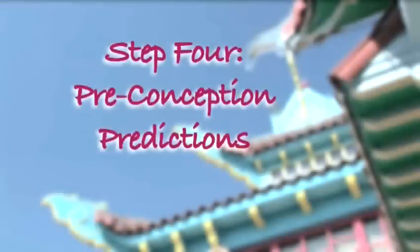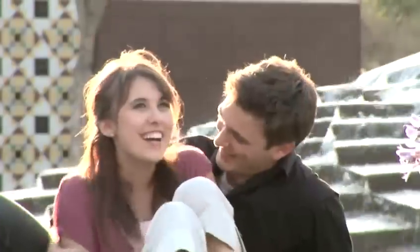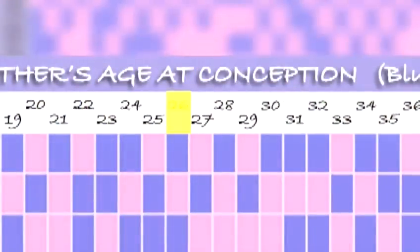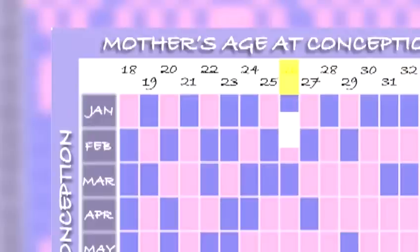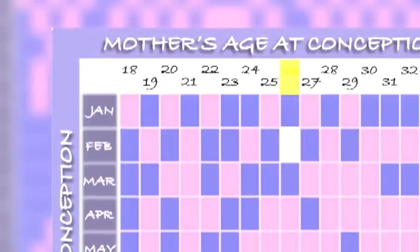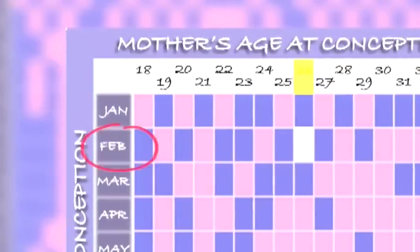Step 4: Pre-conception predictions. If you want to be more proactive, find your lunar age in the upper row, then go across the chart and look for boy or girl. Whichever you choose, look to the left column to find the best month to conceive for a boy or girl.